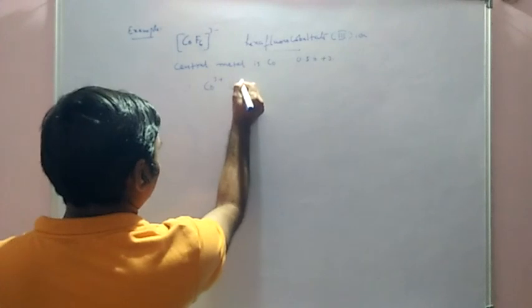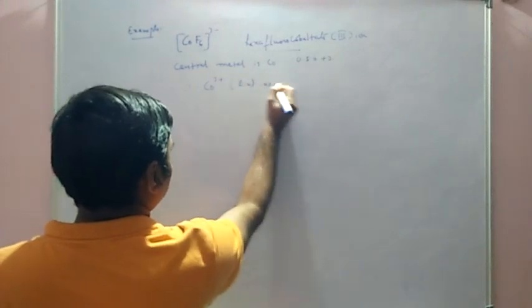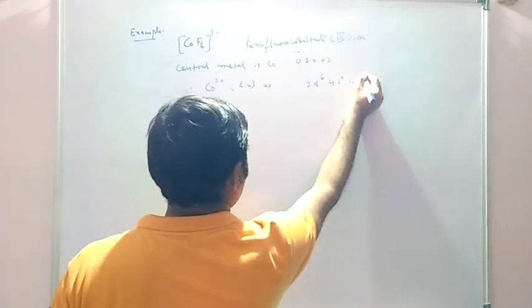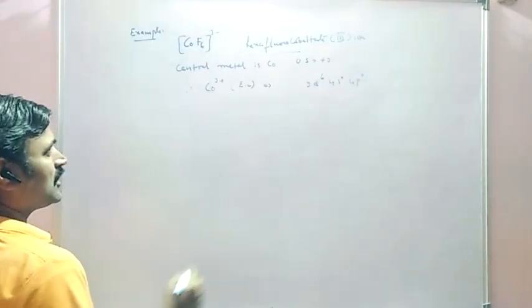For Co3+, you want to write its electronic configuration. It will be 3d6, 4s0, 4p0.